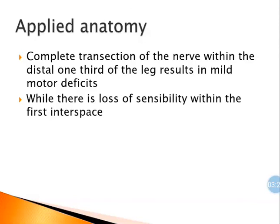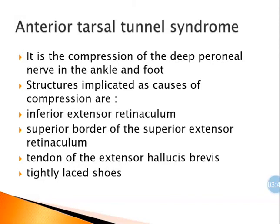Complete transection of the nerve within the distal third of the leg results in mild motor deficits, while there is loss of sensation in the first interspace. There is a syndrome called anterior tarsal tunnel syndrome, which is compression of the deep peroneal nerve at the ankle or foot. Structures causing compression include the inferior extensor retinaculum, the superior border of the superior extensor retinaculum, the tendon of extensor hallucis brevis, and tightly laced shoes.